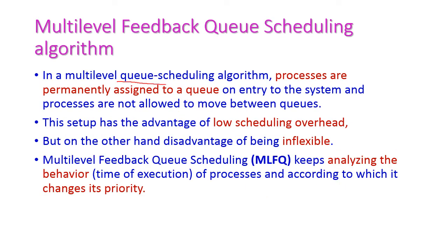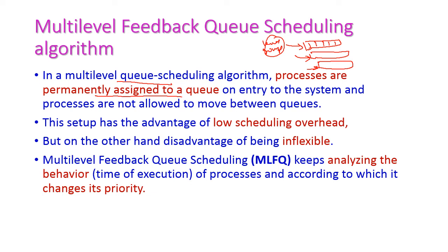In multi-level queue scheduling, the processes are permanently assigned to a queue. There are multiple ready queues and processes are assigned to one queue based on their level or group. This assignment will not be changed. The advantage is low scheduling overhead. However, the drawback is that it is inflexible — we cannot interchange processes between queues.